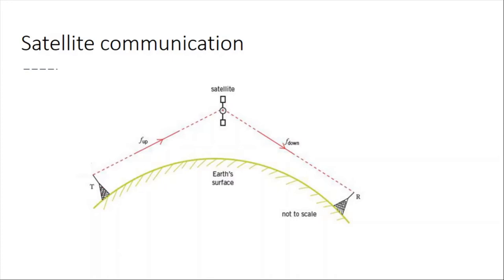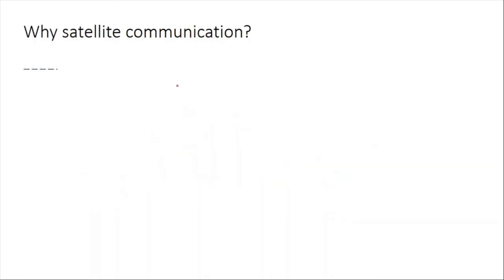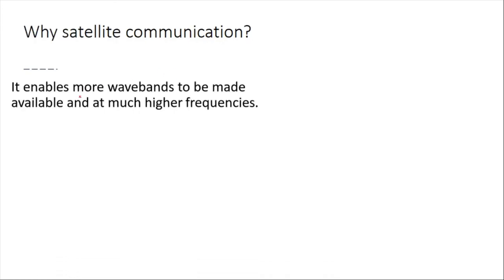What is satellite communication? Here we have a transmitter; the signals from the transmitter are sent to the satellite, and the satellite sends the signals back to the receiver on the earth. This type of communication is more effective than sky wave or ground wave communication. Signals sent upward to the satellites are called uplink, and those sent back to the receiver are called downlink.